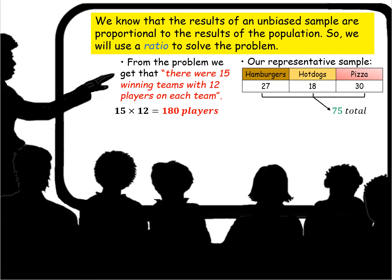Our representative sample of hamburgers, hot dogs, and pizza we had 75 total. So let's look at hamburgers first. If 27 out of 75 of our sample players preferred hamburgers, then how many out of 180 could we predict?